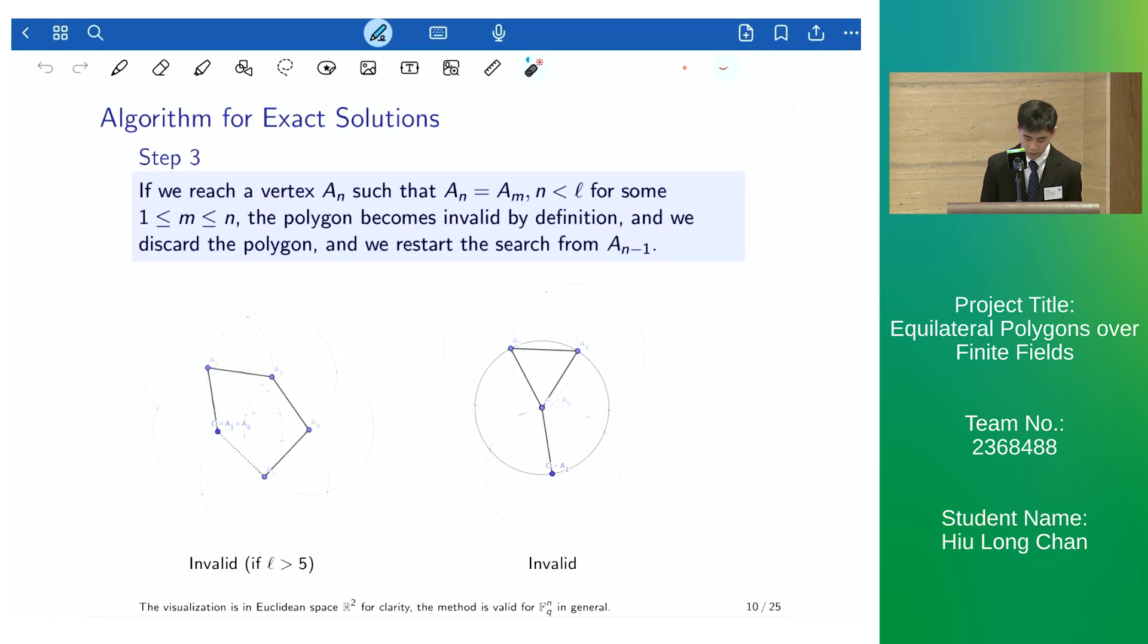On the left side, we have this polygon closes up before it reaches the last vertex, and here we also have the polygon being invalid because it has a cycle of three vertices.